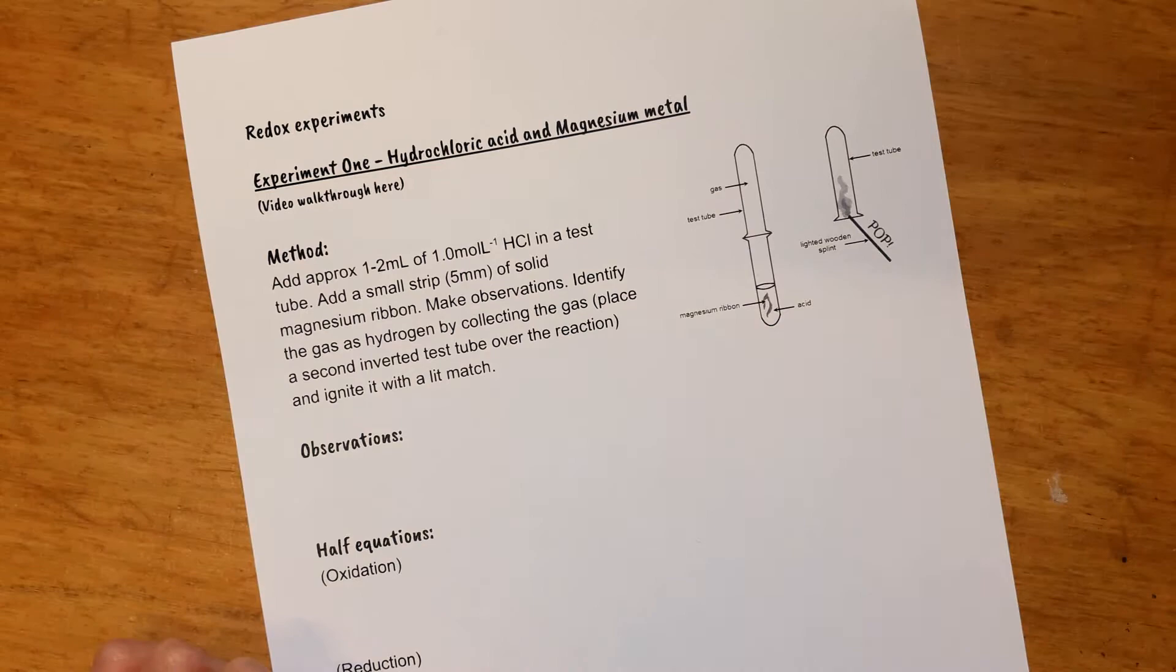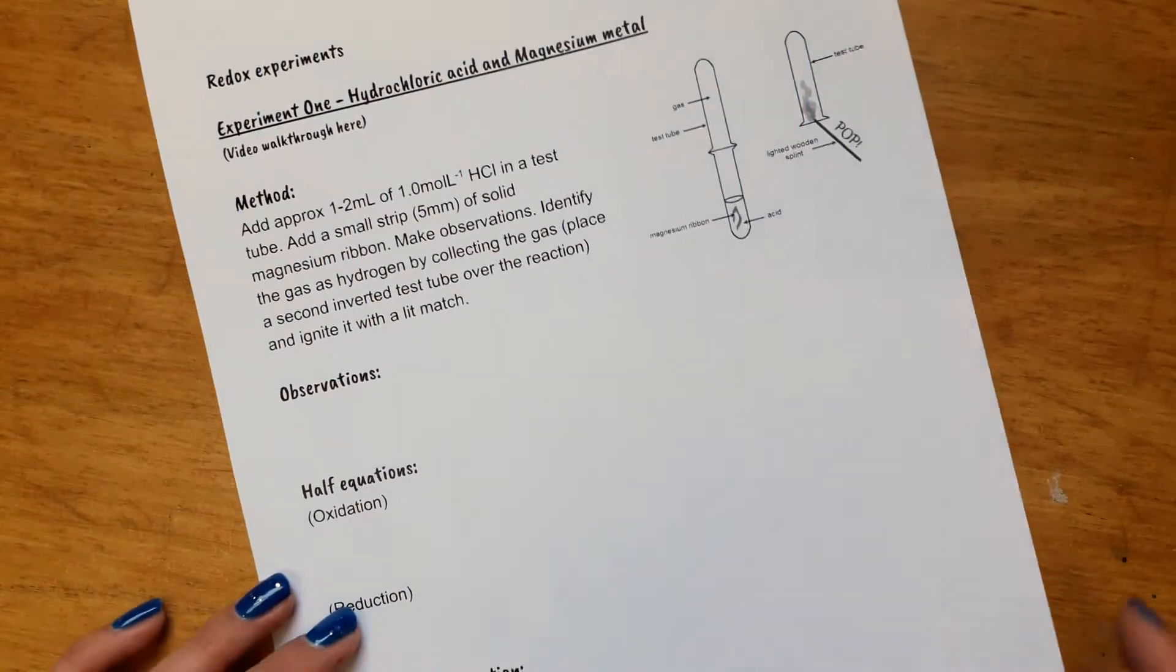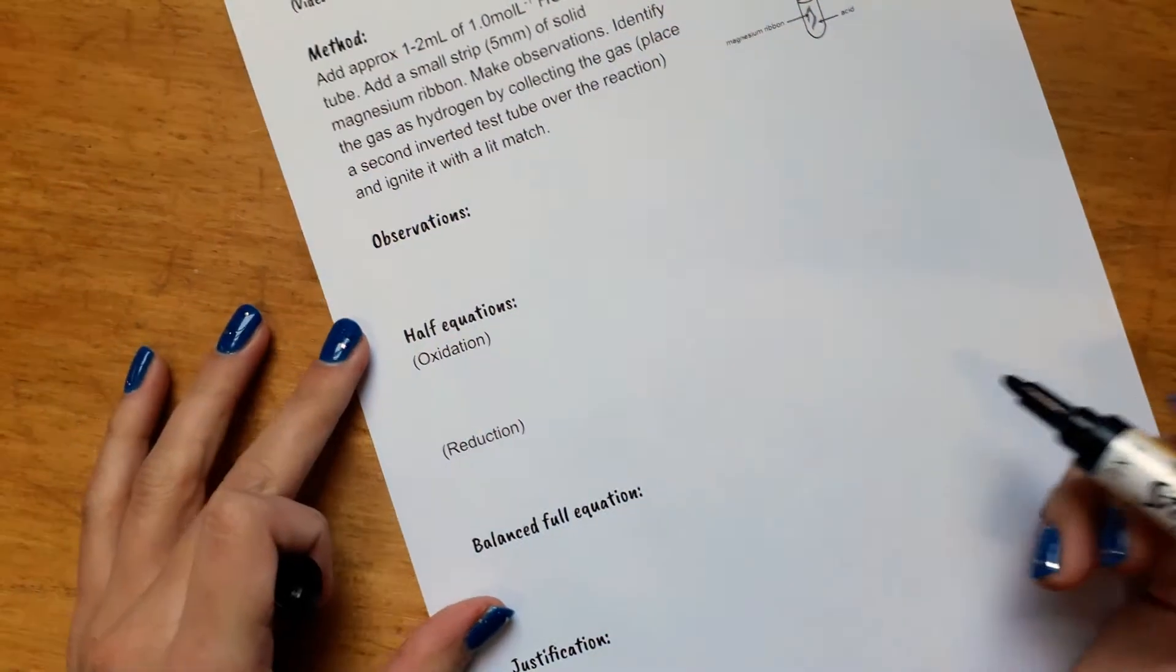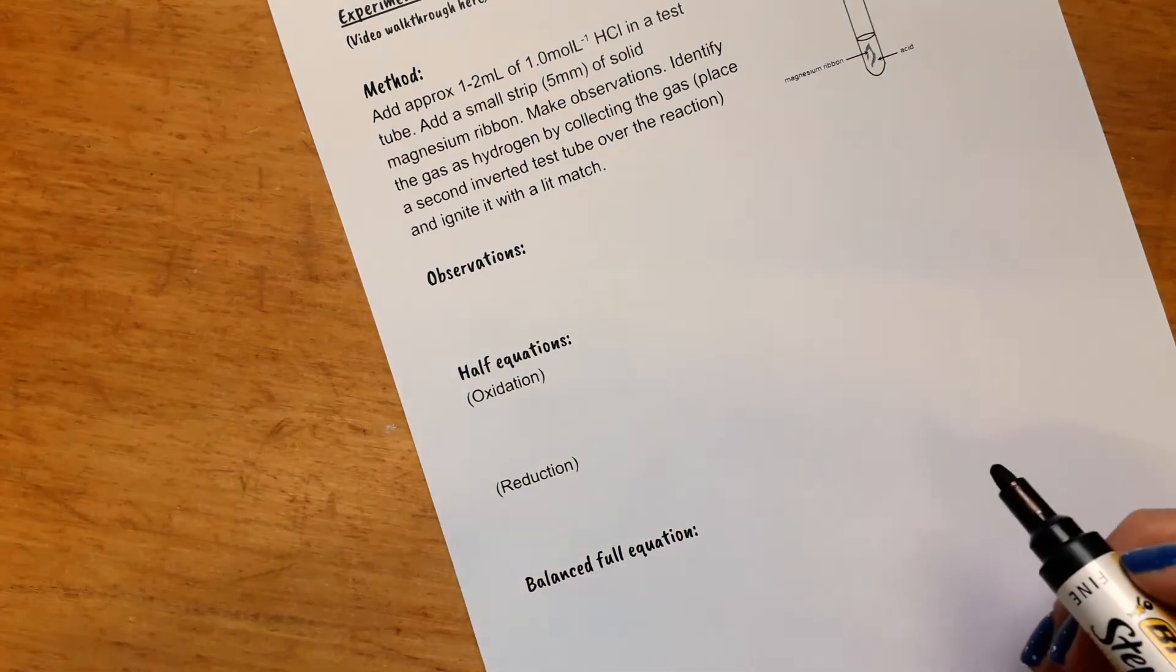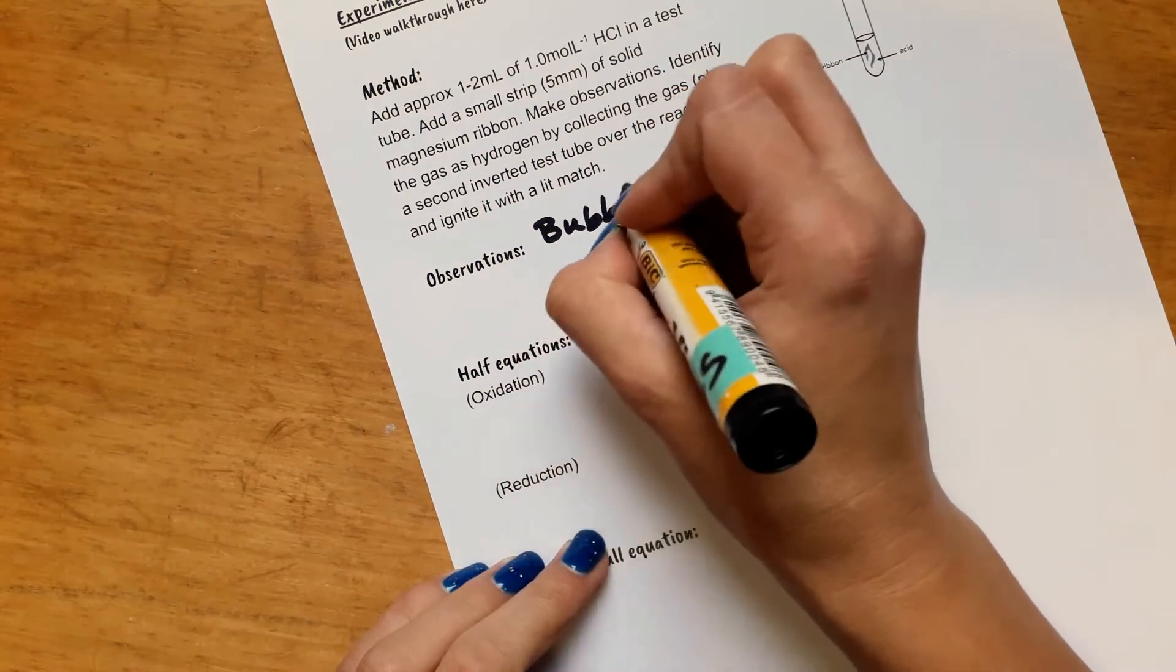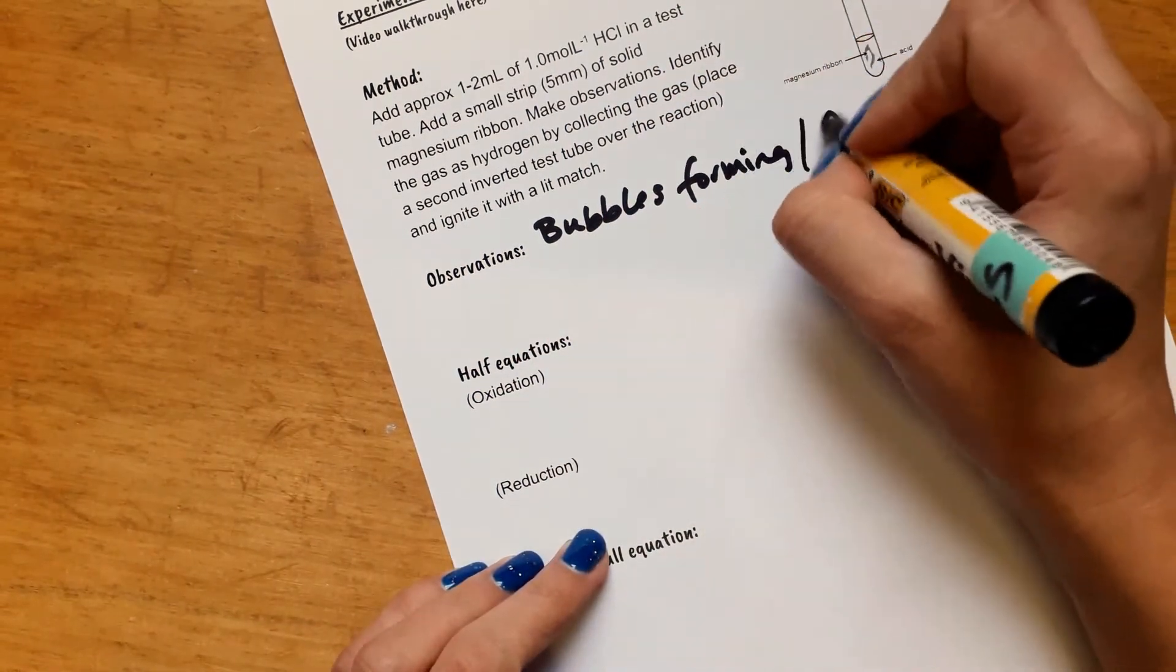Okay, so coming back after having done that in the lab, let's look at how we can write up what we saw. So observations would be something like, you don't say that hydrogen gas is produced because you can't see that, but you can see bubbles forming or fizzing. You can also maybe feel some heat coming off that.